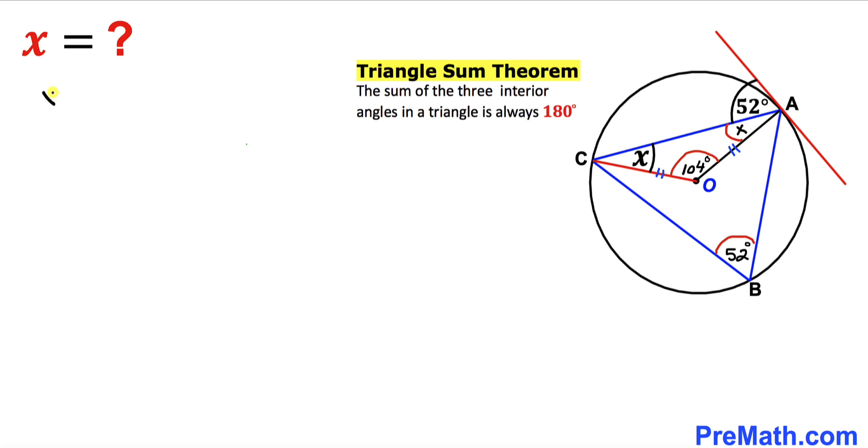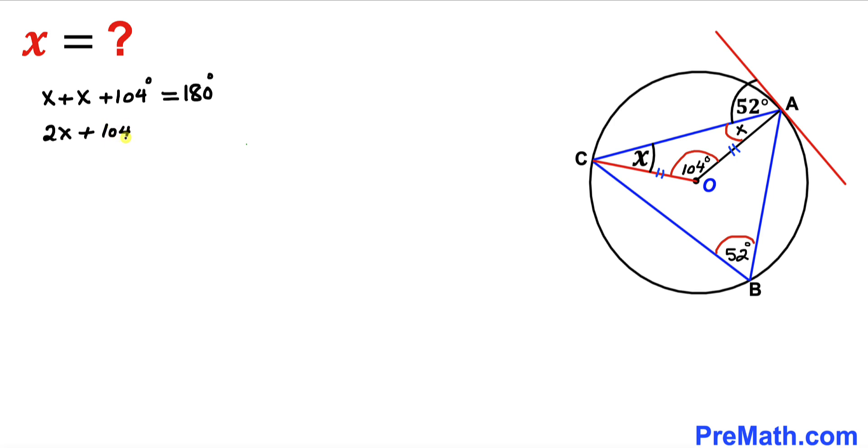So therefore we can write: angle x plus angle x plus 104 degrees must equal 180 degrees. Let's combine the like terms: 2x plus 104 degrees equals 180 degrees. Let's subtract 104 degrees from both sides.